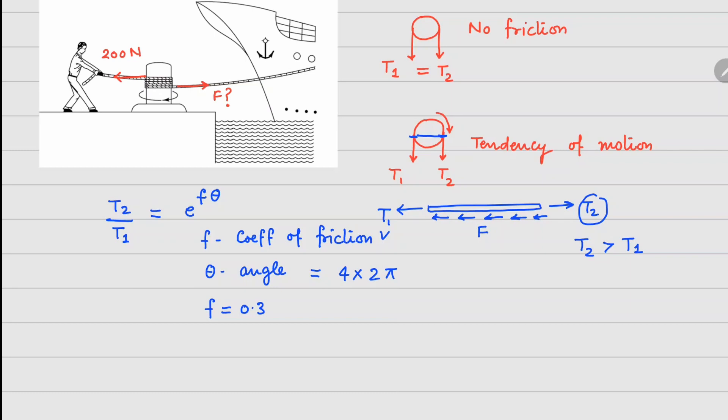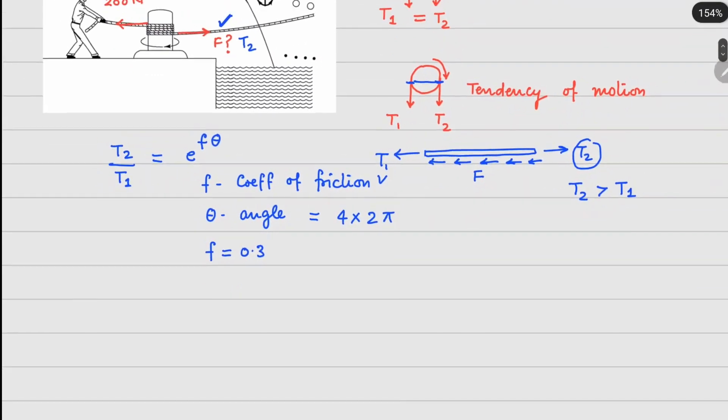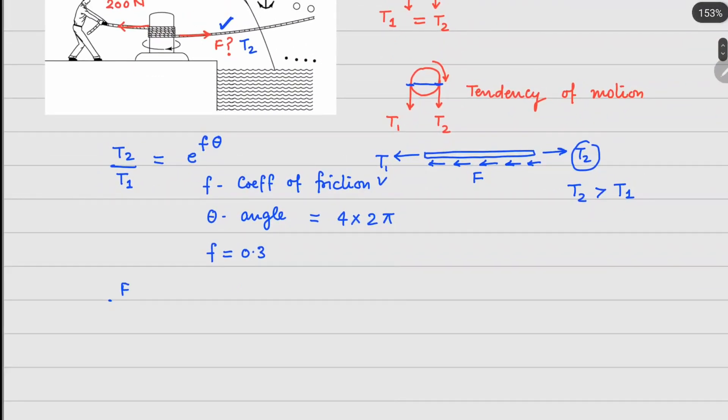So now in our case, this is going to be your T2 and this one is going to be your T1. So if I now substitute these numbers, your F divided by 200 newtons is going to be e to the power 0.3 times 8π. So if I solve this, your F value comes out to be 3.76 times 10 to the power 5 newtons.